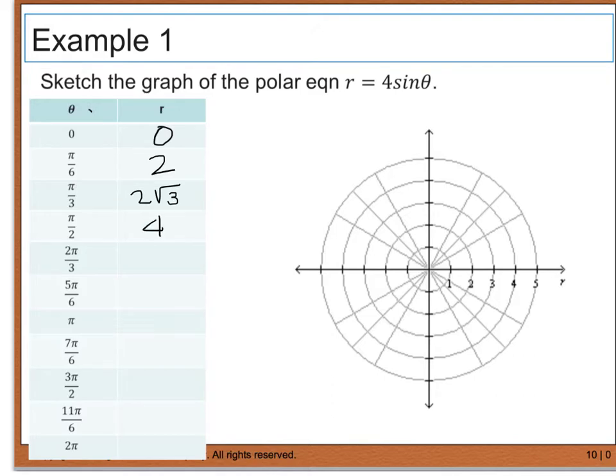When we plug in 2 pi over 3, we end up with 2 square roots of 3. When we plug in 5 pi over 6, we end up with 2. When we plug in pi, we get 0. At 7 pi over 6, we get negative 2. At 3 pi over 2, we get negative 4. At 11 pi over 6, we get negative 2. And at 2 pi, we get 0.